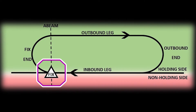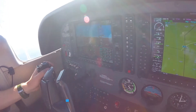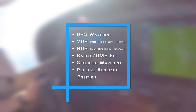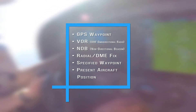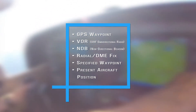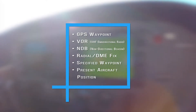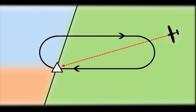The fix: a holding fix is the location that the pilot is assigned to hold at by air traffic control. The holding fix can be a number of different positions, such as a GPS waypoint, VOR, NDB, a radial DME fix, a specified waypoint, or the present aircraft position.